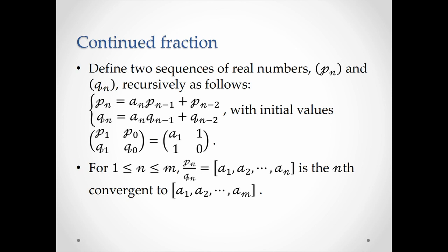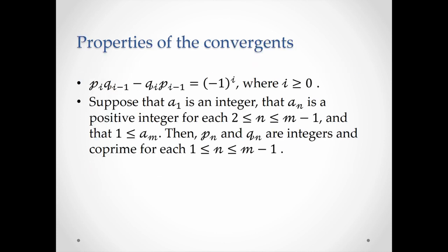We are curious about the formula for the nth convergent of our continued fraction. So we define two sequences of real numbers, Pn and Qn, recursively like this, such that Pn over Qn is equal to the nth convergent to our continued fraction. It is found that the convergents have numerous properties — for example, this equation, which is very important for obtaining the quadratic Pell's equation.